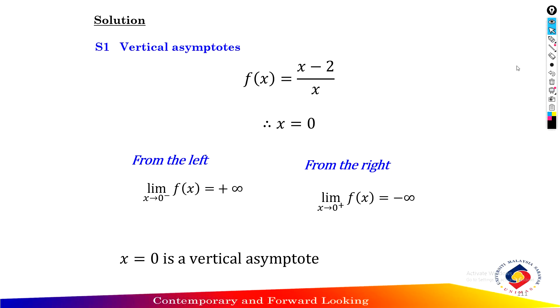Step one: find the vertical asymptote of the rational function f(x) equals x minus 2 over x, using the method of infinite limits.